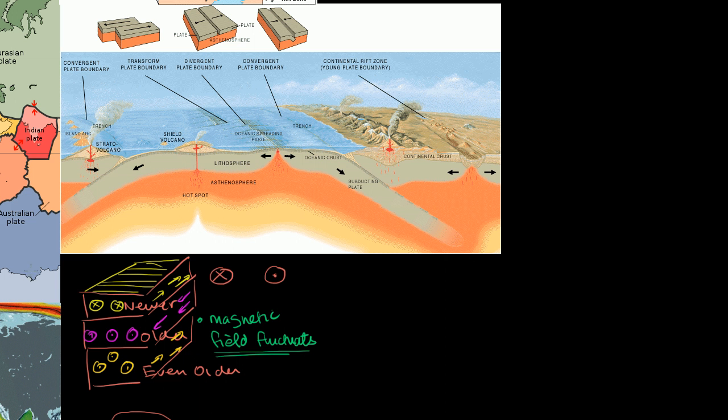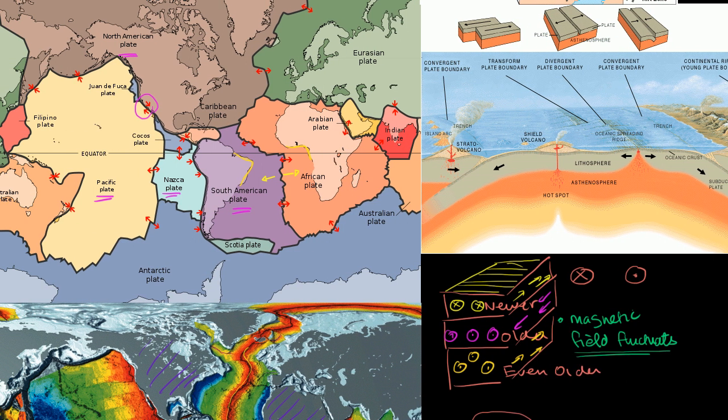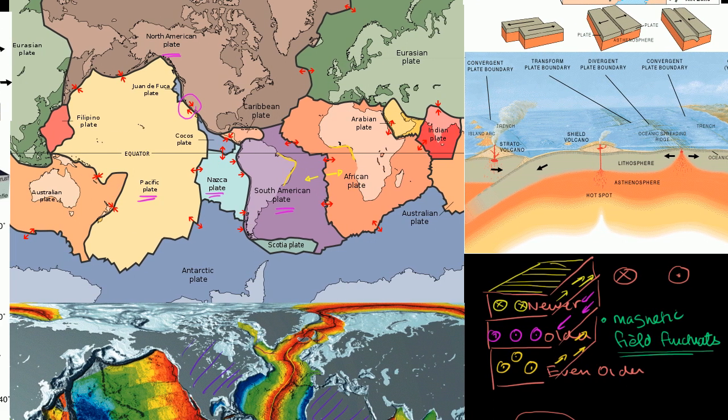Before we go into possible theories as to why plates actually move, what I want to do in this video is think a little bit about why we see the geological features we do see at plate boundaries. In particular, I want to focus on the features we see at divergent plate boundaries, where the plates are moving away from each other, where new land is being created, like we saw in the mid-oceanic ridges, where we see new land being created right in the center and moving outwards from them.